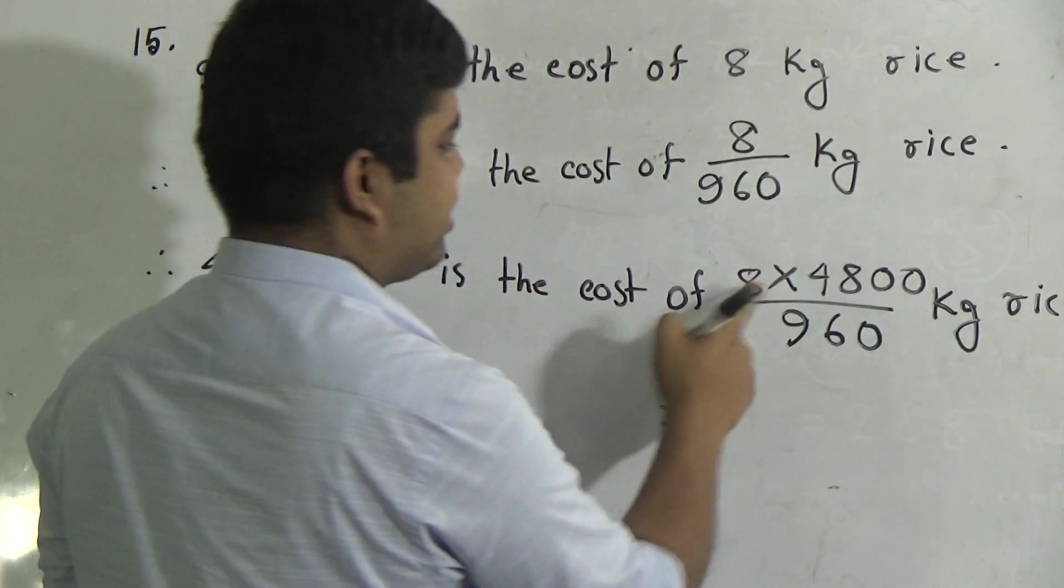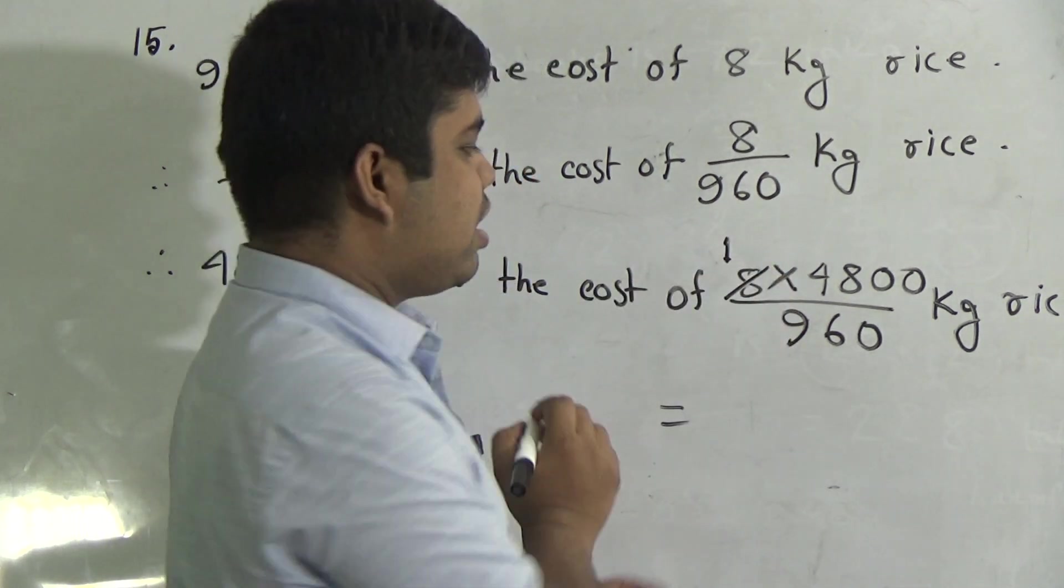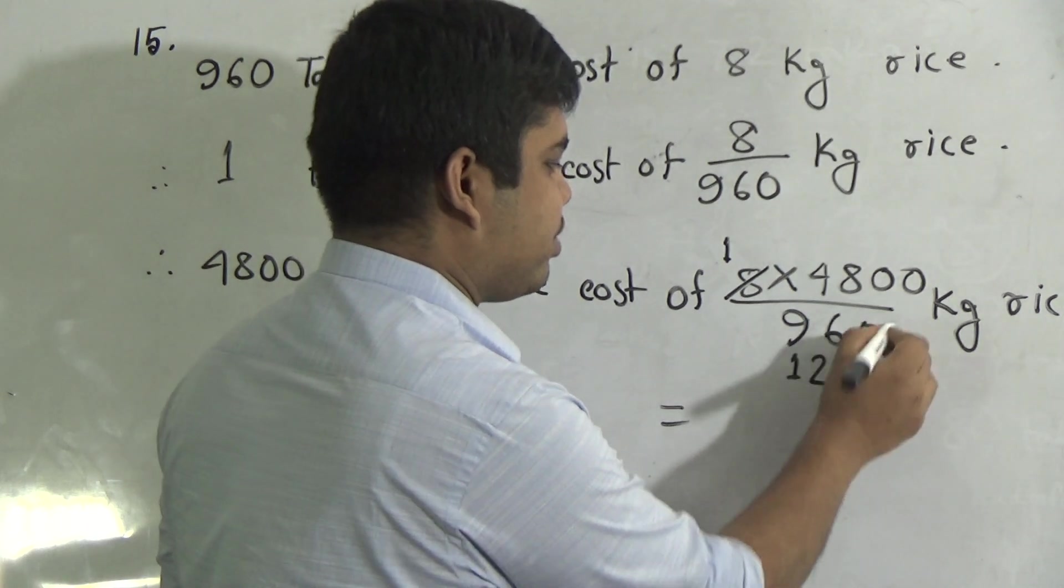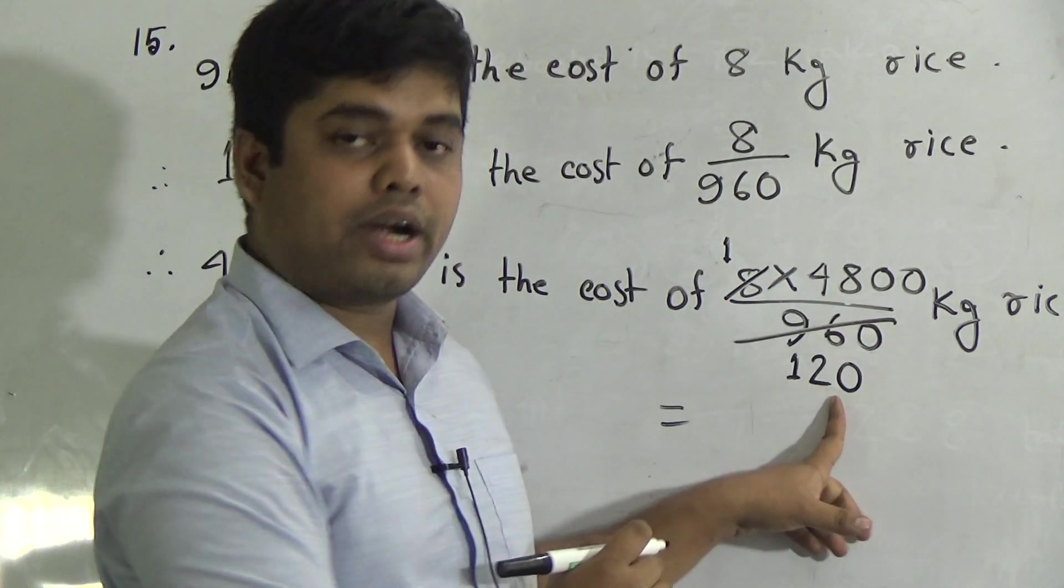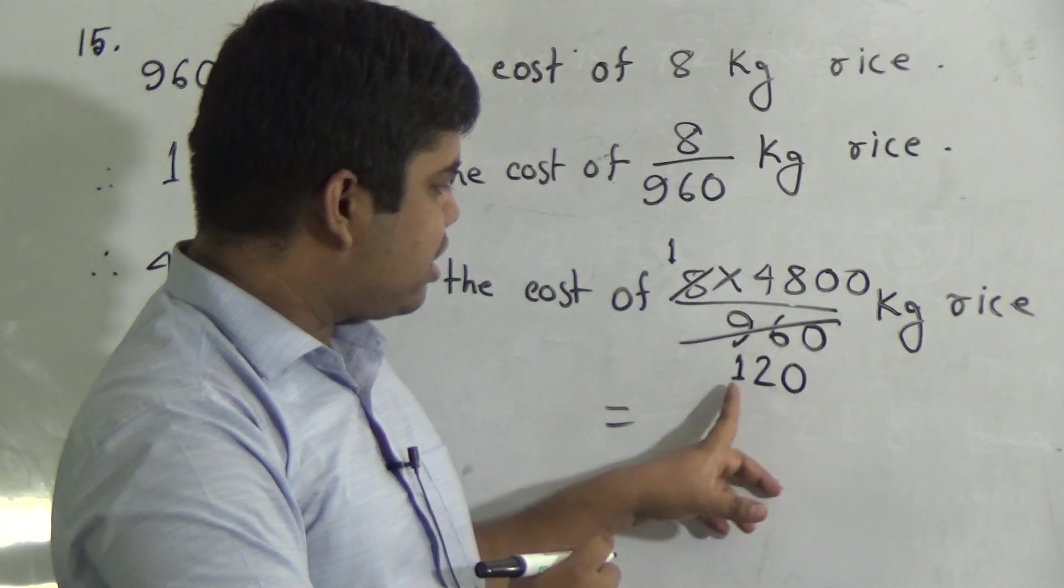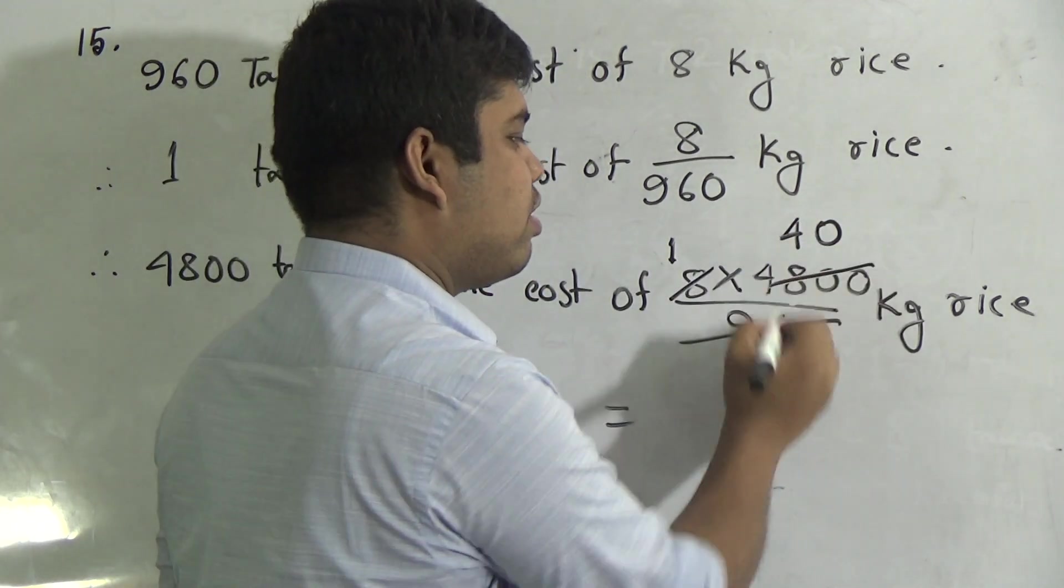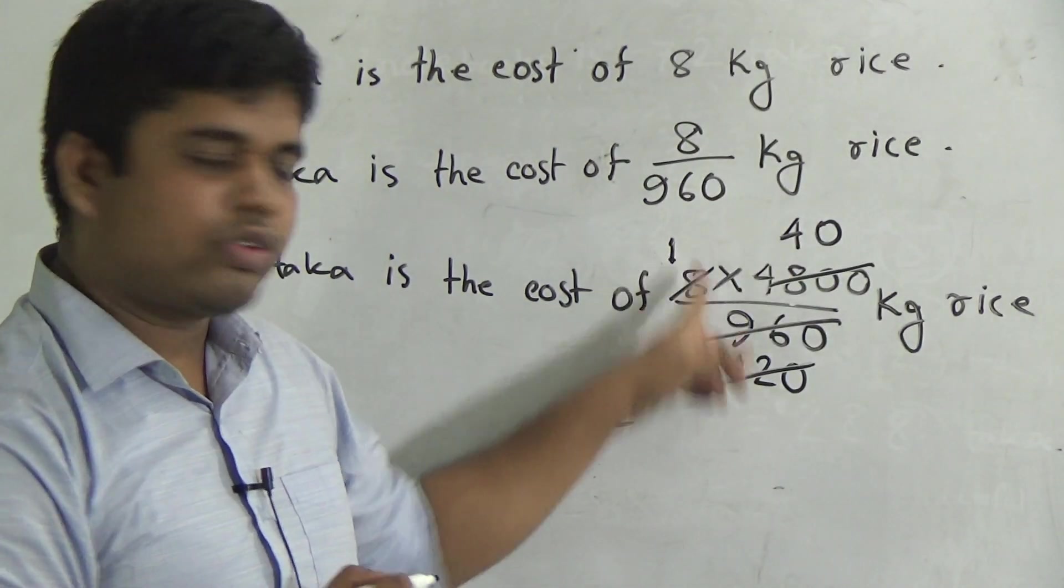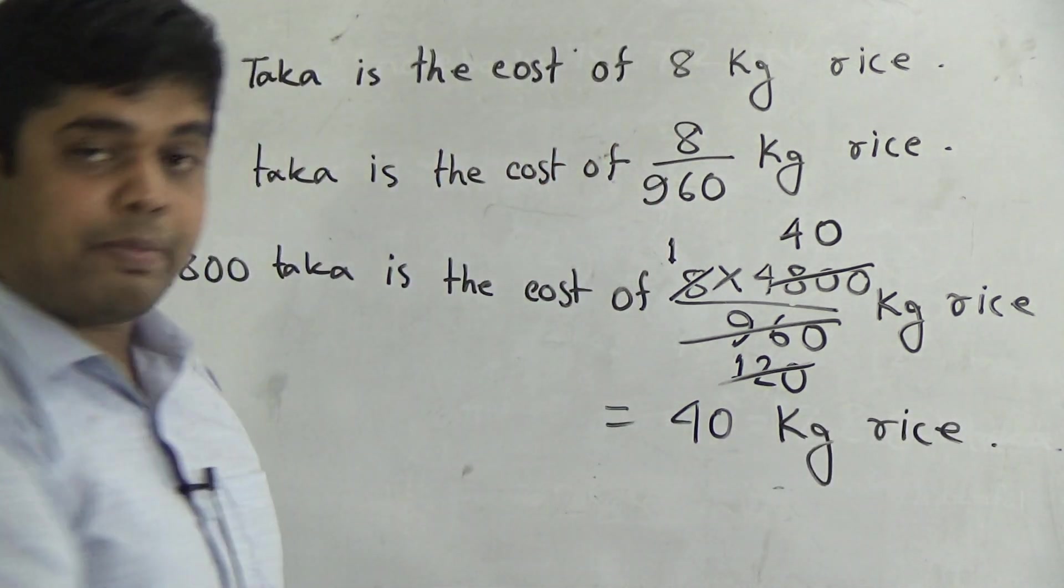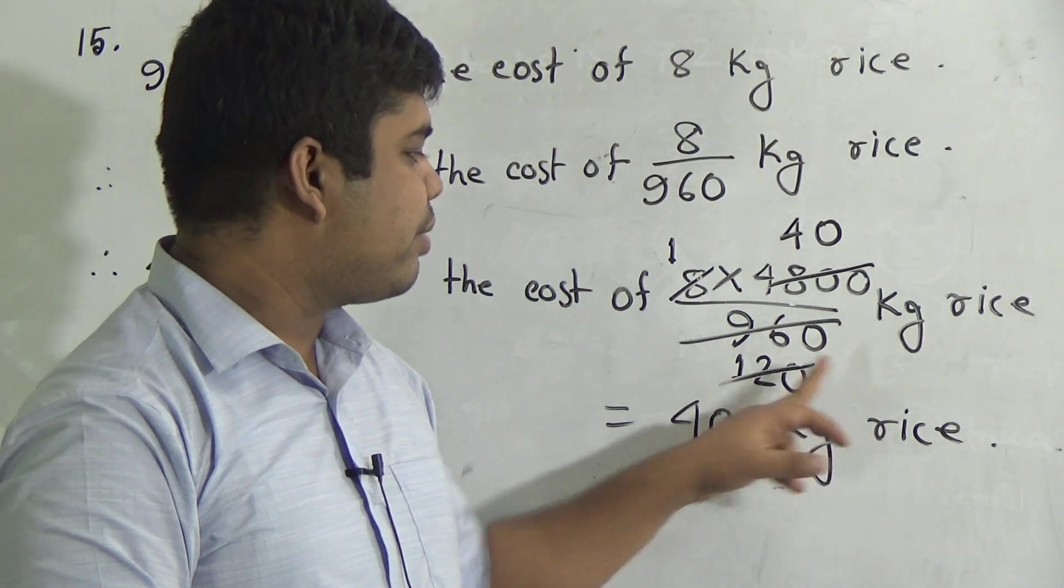Now 8 divided by 960 kg rice. Now we cut this number. Here you notice, we cut this 960 by 8. If we divide 8 by 8, then we get 1. If we divide 960 by 8, then we get 8 on the 8, 16, 8 to the 16 and 0, which is 120. Now we cut this number by 120. So notice, in 4800, 120 goes in 4 times. Next, 0 is placed here. So 40 kg rice. I hope you have understood, 40 ones are 40.